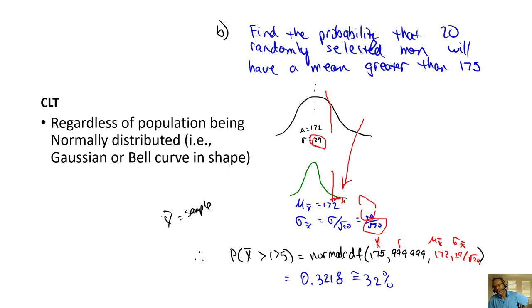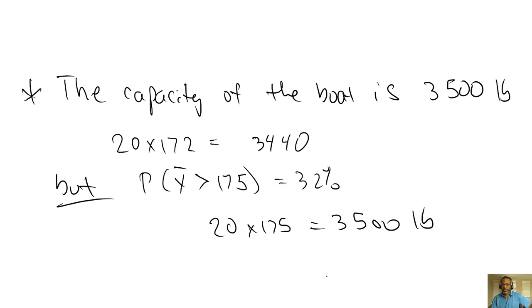That's not a small number. The probability of selecting 20 men and getting an average weight greater than 175 could easily happen, so there is a real risk of the ferry capsizing. The capacity of the boat is 3,500 pounds, and the probability of having an average weight of 175 or greater is 32%. At 175 we're looking at the boat capsizing, so we stand to encounter real problems with a probability of 32%.